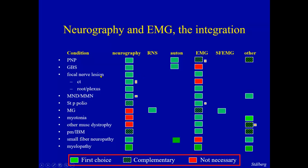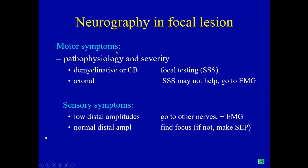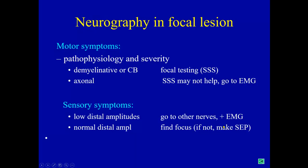When we discuss focal nerve lesions — a very common situation in the EMG lab — neurography is certainly an important test. If we have demyelinating changes or conduction block, then focal testing, sometimes called inching or short segment studies, is indicated. If we have an axonal lesion, the short segment studies usually do not show much, and we may therefore have to go to EMG. If there are mainly sensory symptoms, we rely on low distal amplitudes if there is axonal involvement. But if distal amplitudes are normal, we have to localize the focus another way — for example, SEPs.